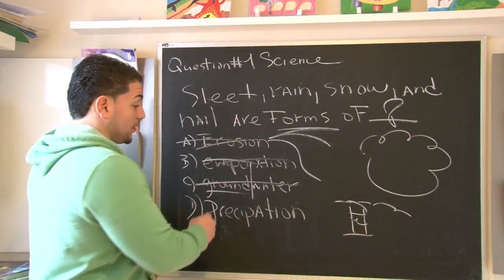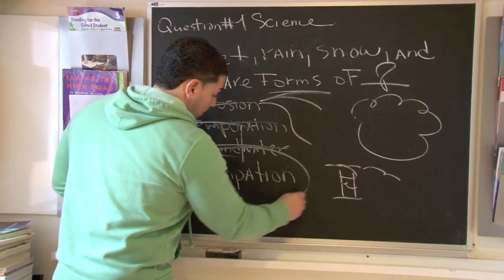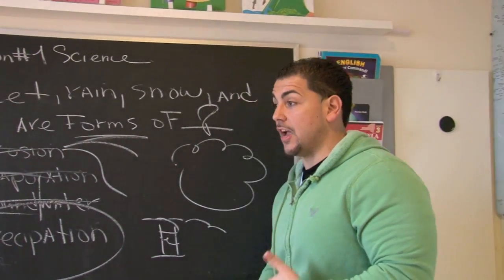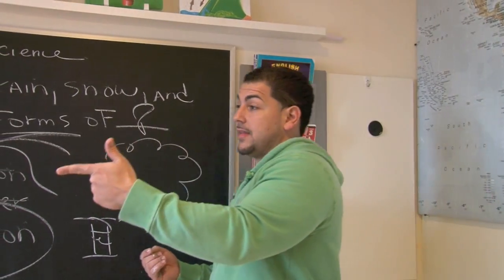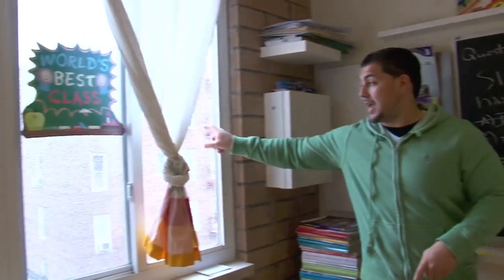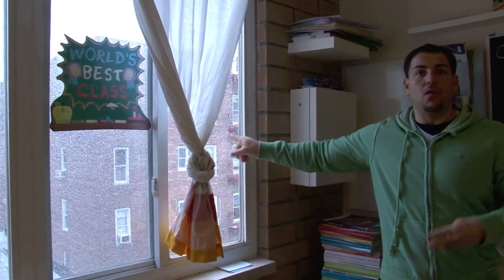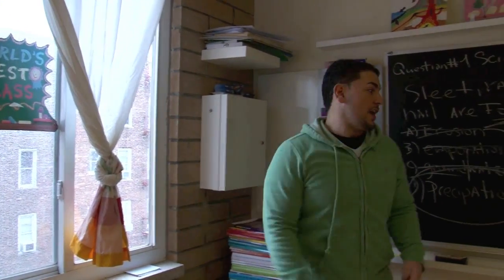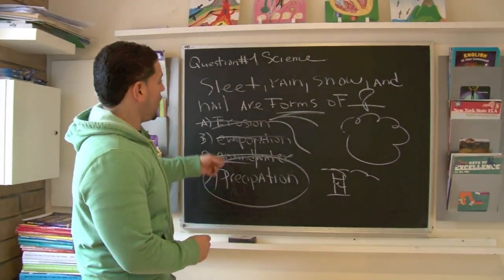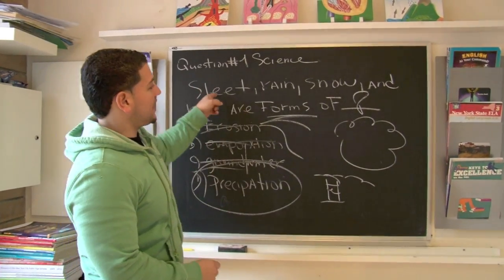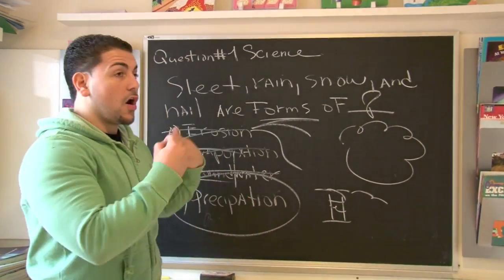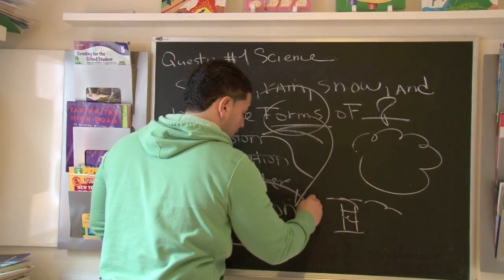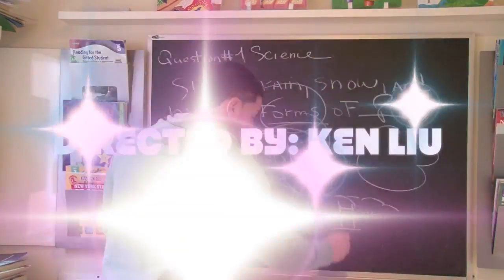The best possible answer, believe it or not, is precipitation. Remember, precipitation is another fancy way of saying rain. Actually today while we're doing this, it's raining outside right now — or if we wanted to be science savvy, we would say it's precipitating outside. So when they say sleet, rain, snow, and hail are all forms of — well, they're all forms of precipitation. That's the correct answer.